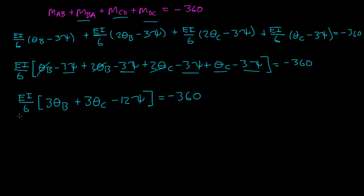Let's get rid of this 6, so multiply everything by 6. So, you get EI times 3 theta B plus 3 theta C minus 12 psi is equal to 6 times negative 360 is negative 2160.